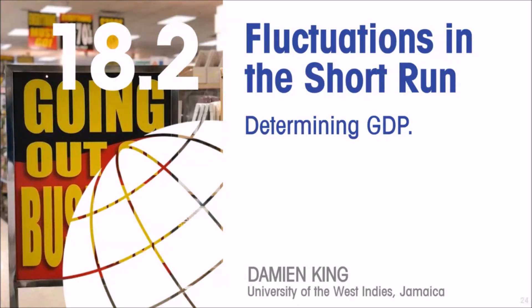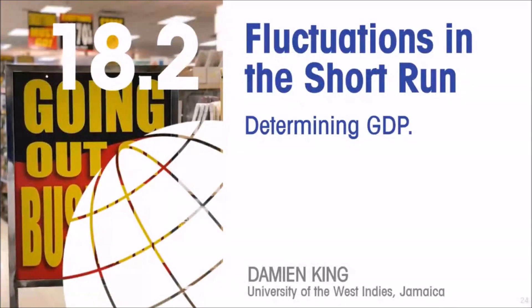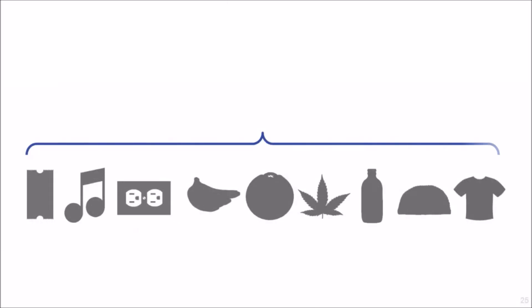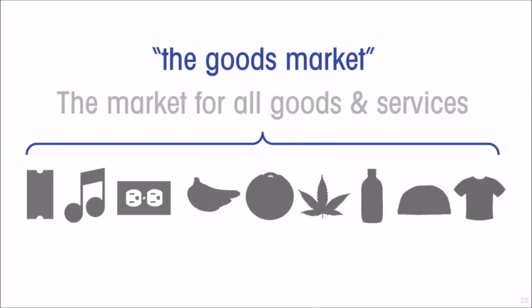We want to look at how fluctuations around an economy's average level of output — its normal capacity level of output — change from year to year and fluctuate around its trend level. To do so, we aggregate all goods and services into one giant market, which we call the goods market.